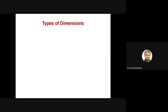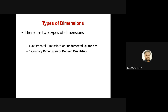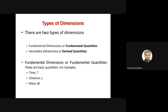When we talk about these types of dimensions, whenever we are measuring physical quantities we are measuring with respect to some arbitrary fixed values. Those fixed values, in our case MLT — mass, length, and time — are the fundamental properties. Other properties can be derived from these fundamental properties. So there are two types of dimensions: fundamental dimensions, also called fundamental quantities, and secondary dimensions, also called derived quantities.